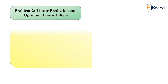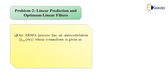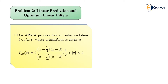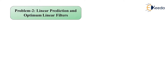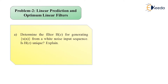The problem statement for Problem 2 is: An ARMA process has an autocorrelation γ_xx(m) whose Z-transform is given as Γ_xx(Z) = 9 · [(Z − 1/3)(Z − 3)] / [(Z − 1/2)(Z − 2)], where the region of convergence is 1/2 < |Z| < 2.